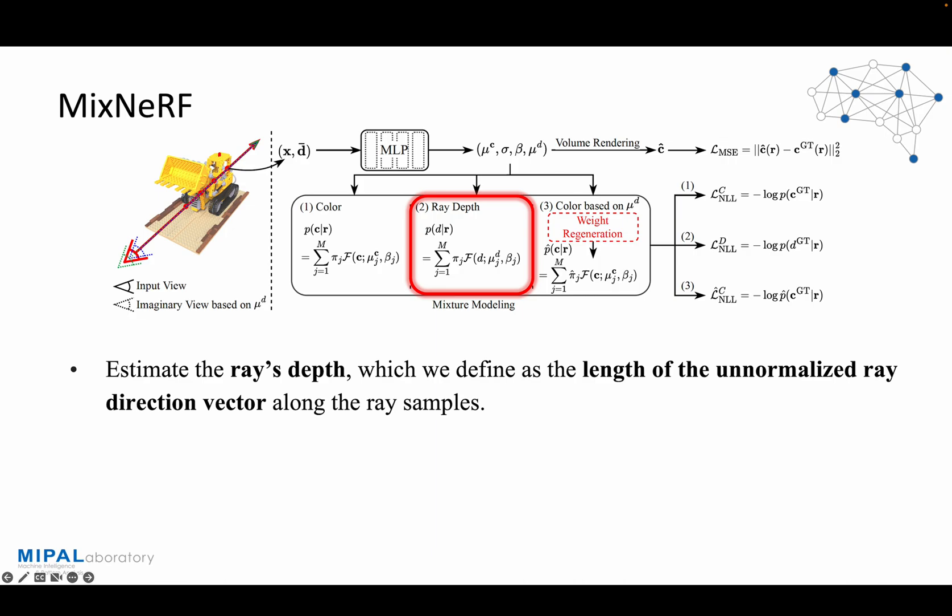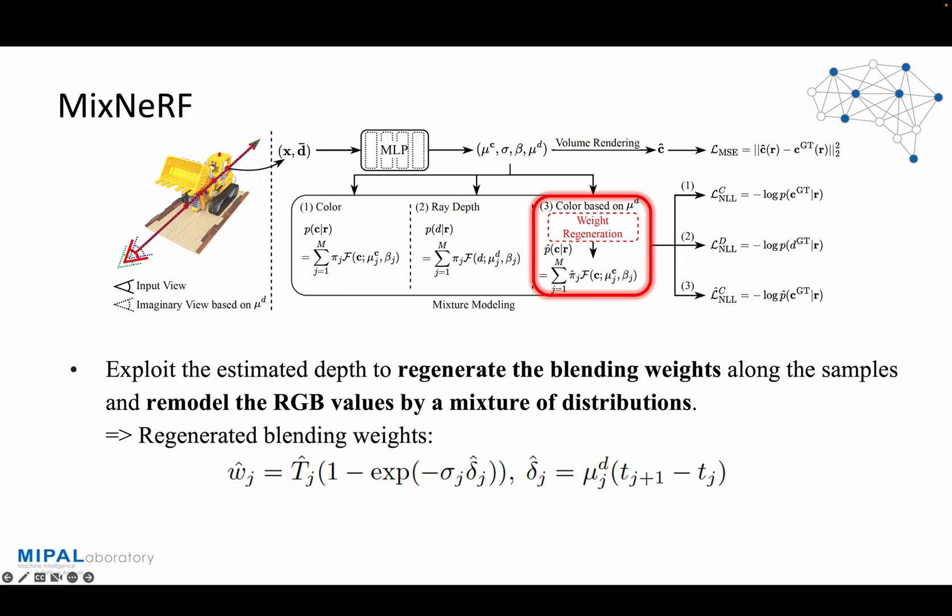Notably, our direct estimation of the ray's depth contributes to the overall performance and effectiveness of MixNeRF. Furthermore, we leverage the estimated ray depth to reconstruct the blending weights along the samples and remodel the RGB color values using a mixture of distributions. The estimated ray depth, while not precisely identical but nearly close to the ground-truth ray depth, serves as pseudo-geometry for neighboring points, allowing us to employ the same ground-truth color values of input rays to model the mixture distribution based on newly generated blending weights. This approach enhances the model's robustness to color shifts and changes in ray viewpoints by effectively remodeling a ray with regenerated blending weights, eliminating the need for pre-generation or additional inference of unseen views.